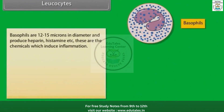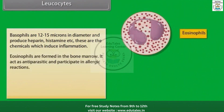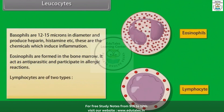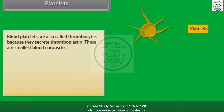Basophils are 12 to 15 microns in diameter and produce heparin, histamine, etc. — chemicals which induce inflammation. Eosinophils are formed in the bone marrow; they act as anti-parasitic and participate in allergic reactions. Lymphocytes are of two types, B and T lymphocytes, and they fight with diseases.